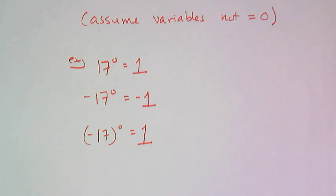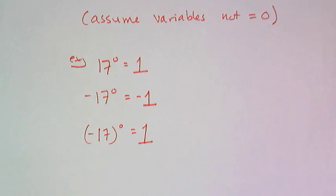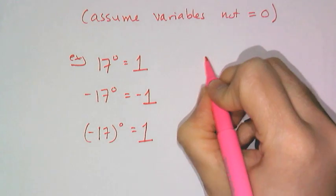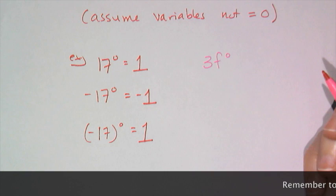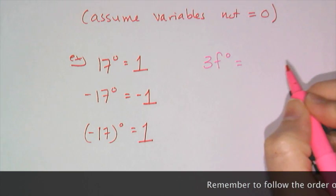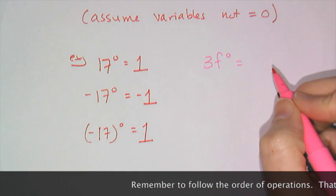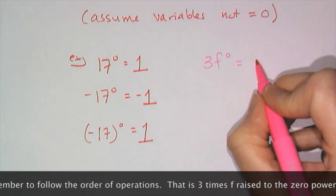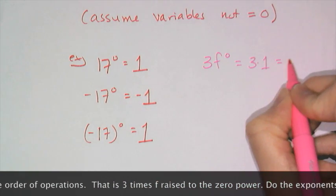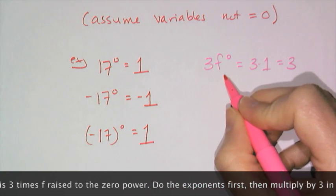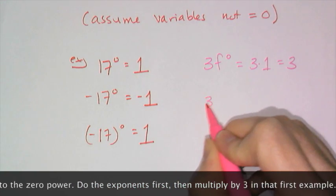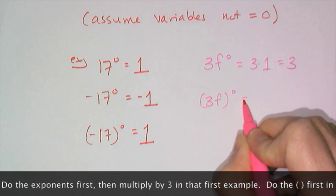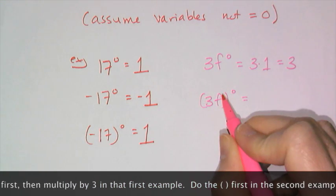Now we're not going to only deal with these super basic level ones. I'm going to fancy them up a bit by putting variables in there. So then if I ask you what that is you apply the exponent to the only thing it applies to and that's the f. So you get three times one which is three assuming of course that f is not equal to zero.